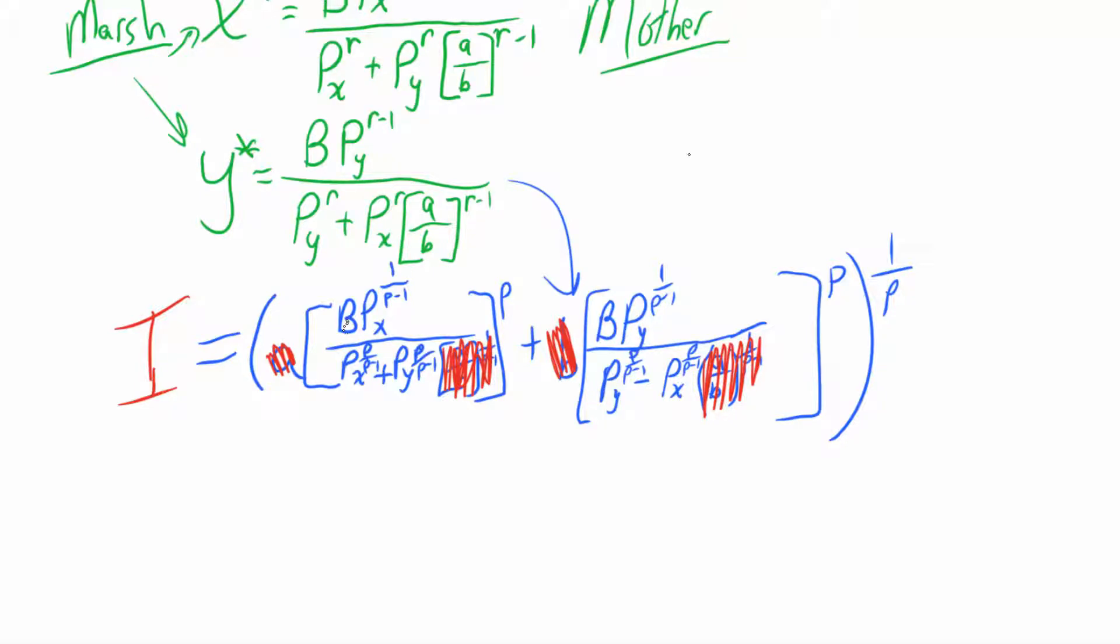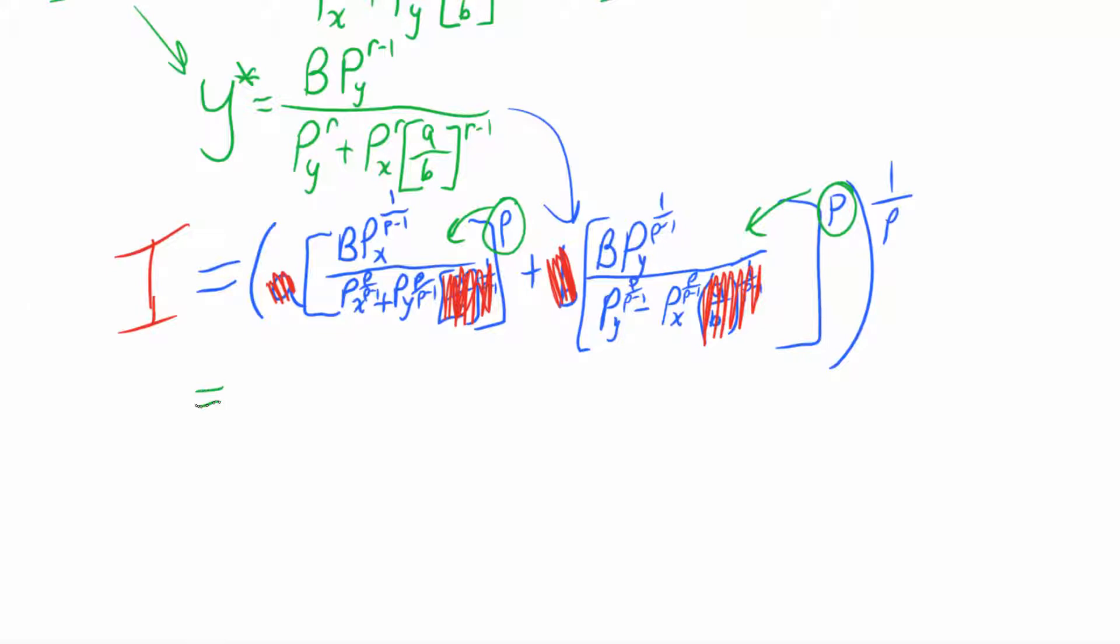What we want to do now, first step, we're going to distribute these exponents to everything on the inside here. Let's do that, not all that difficult. We multiply exponents since we're raising these to a power. So we're going to end up here with b price of x to the ρ over ρ minus one divided by price of x.